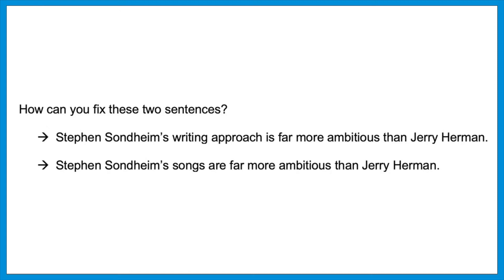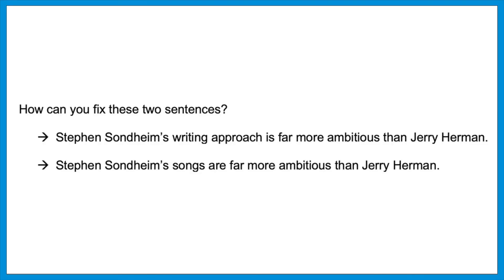Whatever you talk about in the first part of the comparison has to stay consistent in the second part. Consider: 'Steven Sondheim's writing approach is far more ambitious than Jerry Herman.' We're comparing Sondheim's writing approach to the person Jerry Herman — we can't do that. We need to compare a writing approach to a writing approach. The test specifically wants you to say: 'Stephen Sondheim's writing approach is far more ambitious than that of Jerry Herman.' The phrase 'that of' refers back to the writing approach.